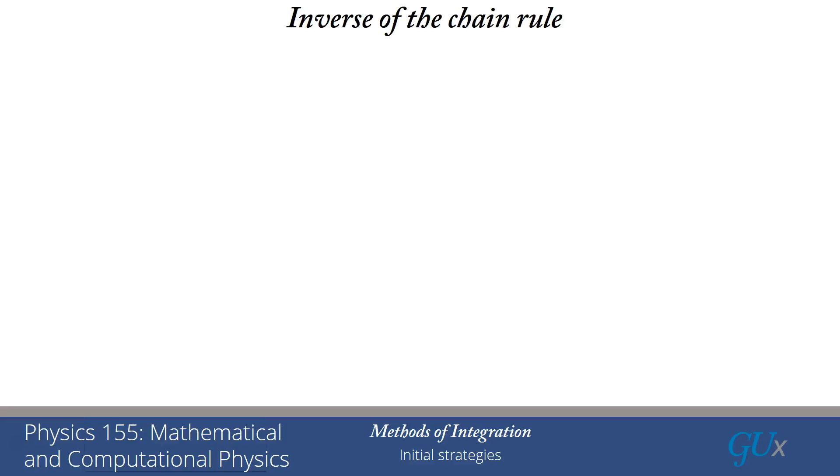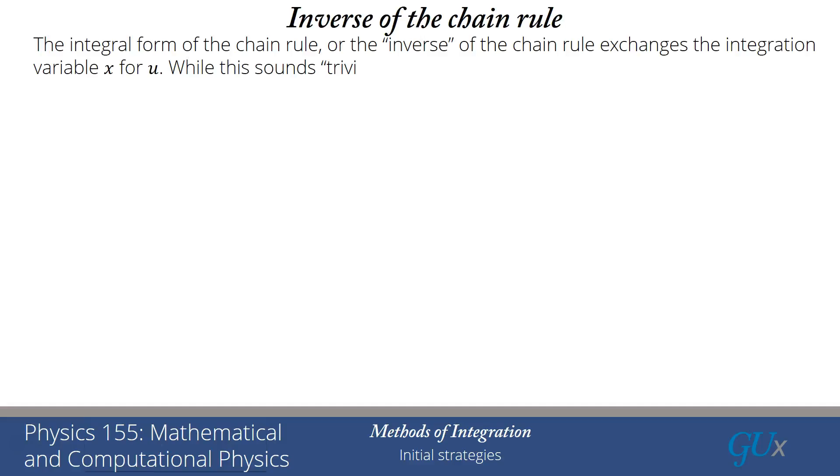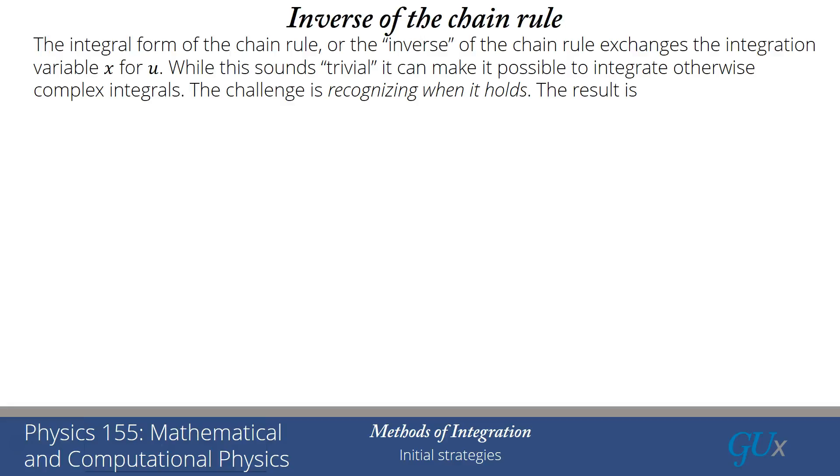Now, to use this for integration, we sort of need what you would call the inverse of the chain rule. And the integral form of this chain rule, or the inverse of the chain rule, is going to exchange the integration variable from an integral over x to an integral over u. That sounds kind of trivial, but what it does is it actually makes it possible to integrate many kinds of integrals that otherwise look very complex and look like you can't integrate them at all. The hard thing to do is to recognize when you have the situation, when it holds.